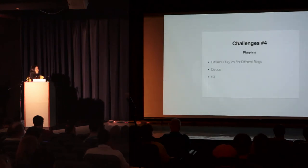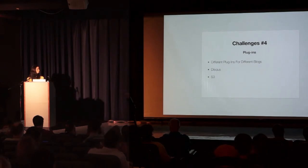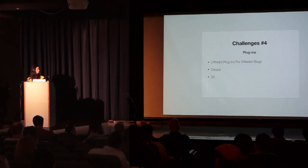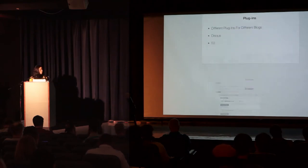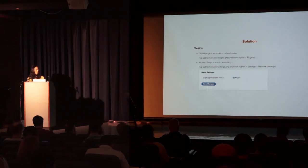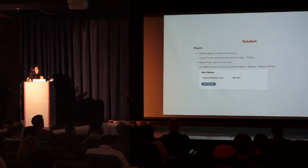Challenge number four was plugins. Similar to widgets, some plugins were for all blogs and some were specific to certain blogs. Disqus required special handling, as did S3. For plugins used across all blogs, we enable them network-wide via Network Admin > Plugins. But WordPress Multisite by default doesn't let you control plugins on an individual blog basis — you need to enable that. Go to Network Admin > Settings > Network Settings, and at the bottom under Menu Settings, check the plugin option under Enable Administration Menus.